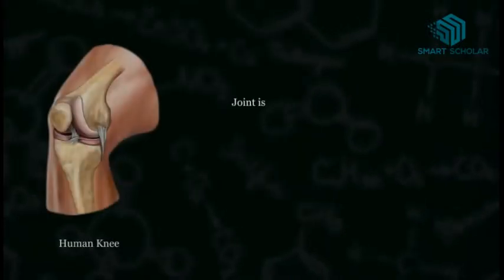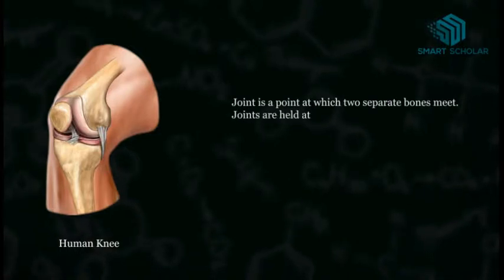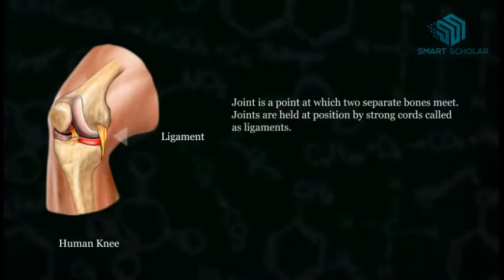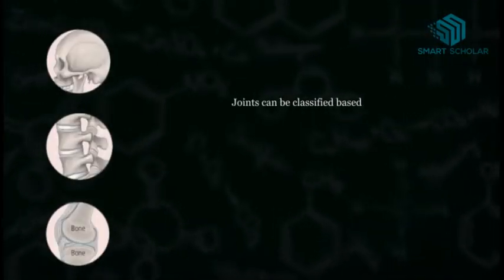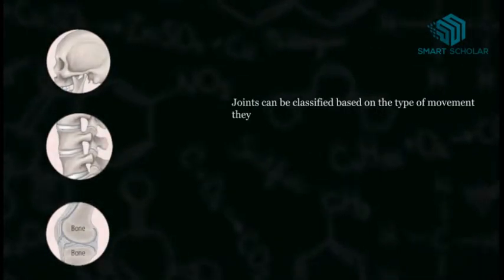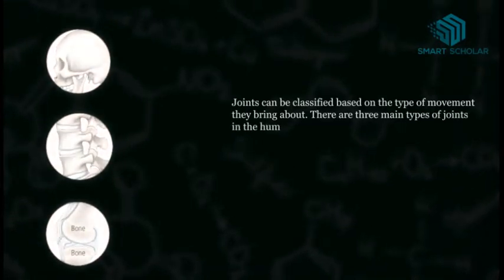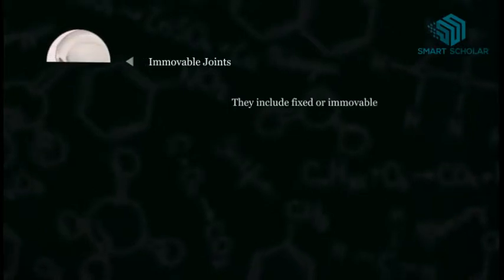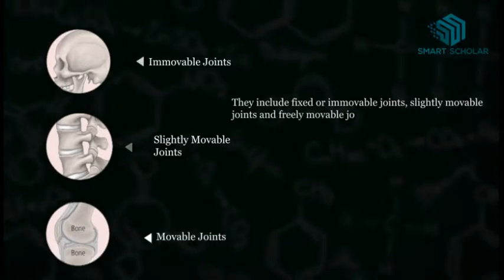A joint is a point at which two separate bones meet. Joints are held in position by strong cords called ligaments. Joints can be classified based on the type of movement they bring about. There are three main types of joints in the human body: fixed or immovable joints, slightly movable joints, and freely movable joints.